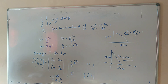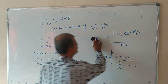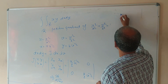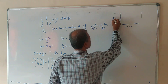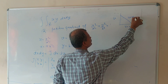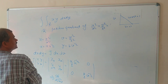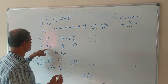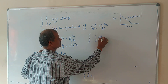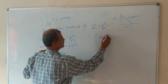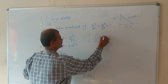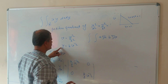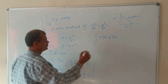The Jacobian matrix entries are: x_u equals a/(2√u), x_v equals 0, y_u equals 0, y_v equals b/(2√v). The determinant gives J equal to ab/(4√(uv)). So the region of integration becomes u equal to 0, v equal to 0, and u plus v equal to 1.